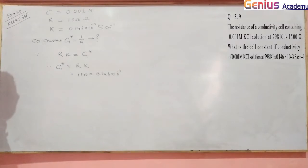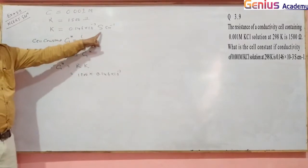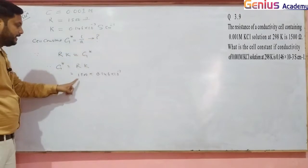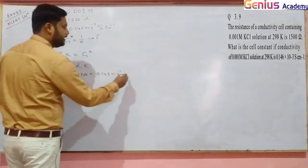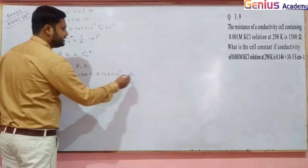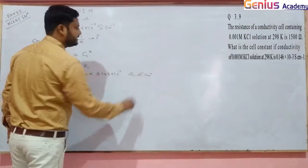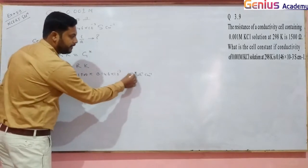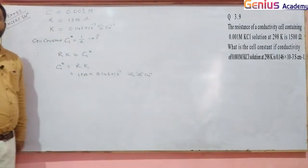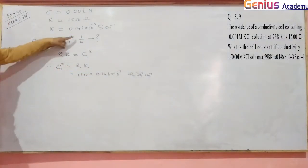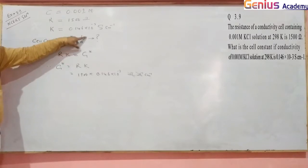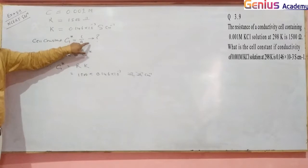The unit will be - siemens is per ohm, so ohm and per ohm cancel, leaving only per centimeter. This is correct because L/A is centimeter divided by centimeter squared, which gives per centimeter.